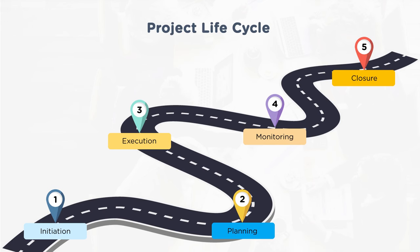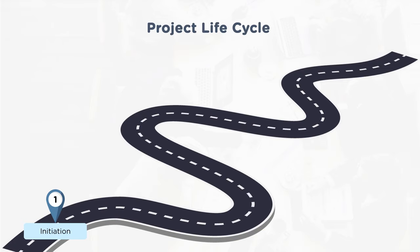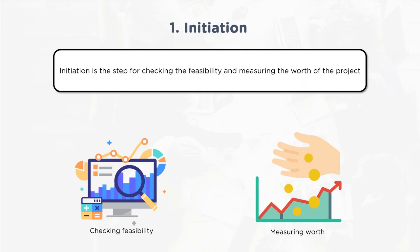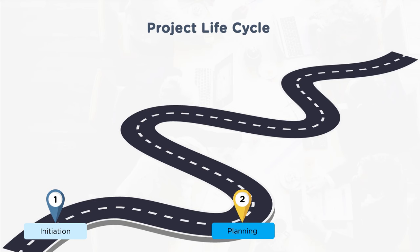The project life cycle involves five process groups: initiation, planning, execution, monitoring, and closure. Initiation is about understanding what the project is, collating details, and identifying key stakeholders. One must check feasibility and confirm that the investment makes sense before proceeding.